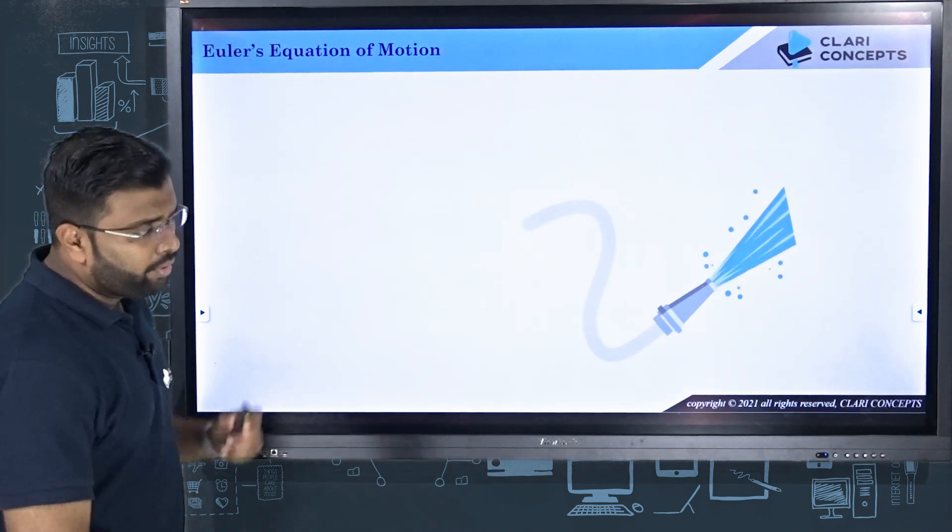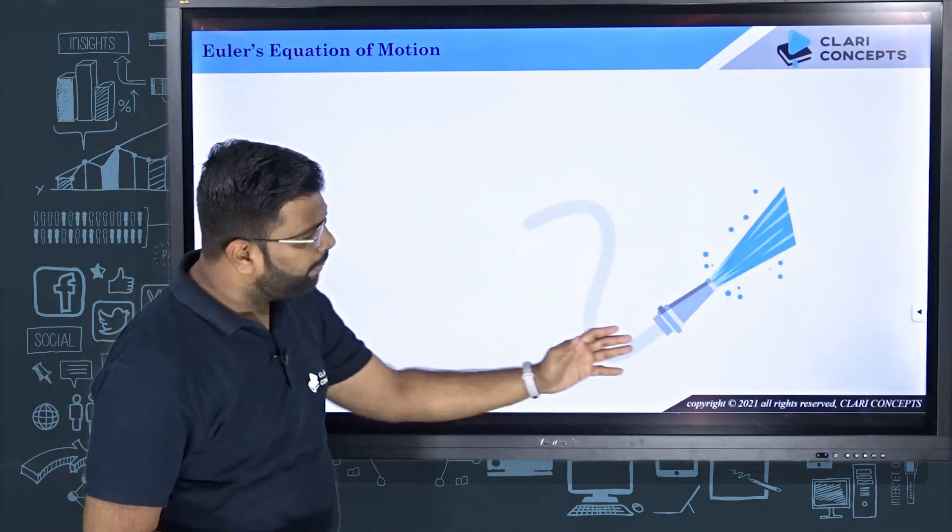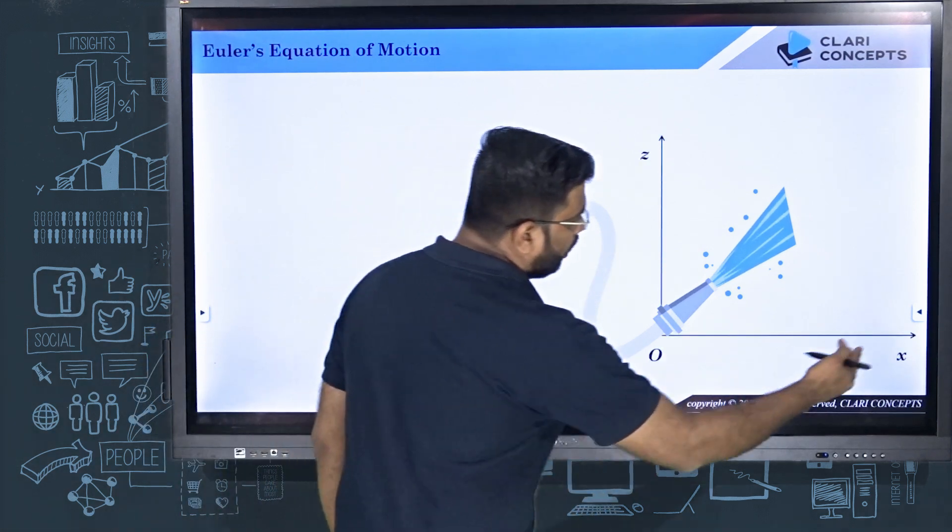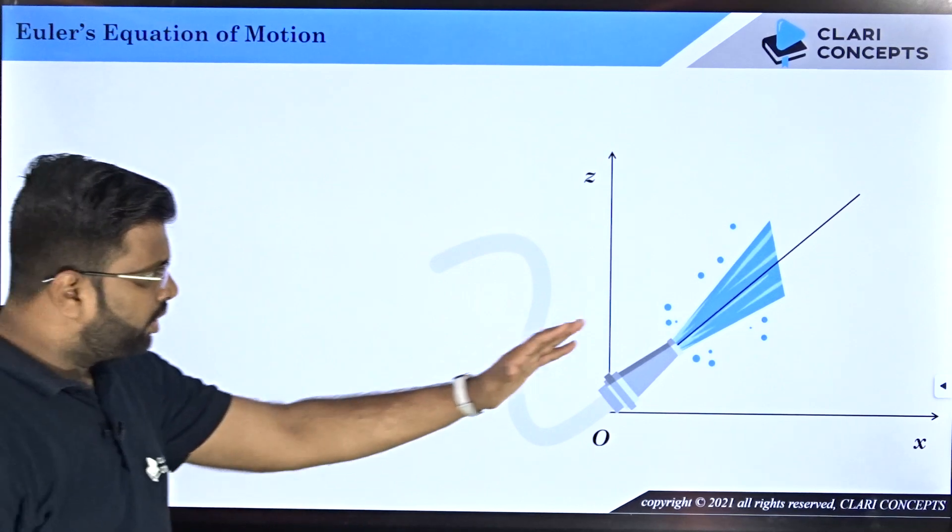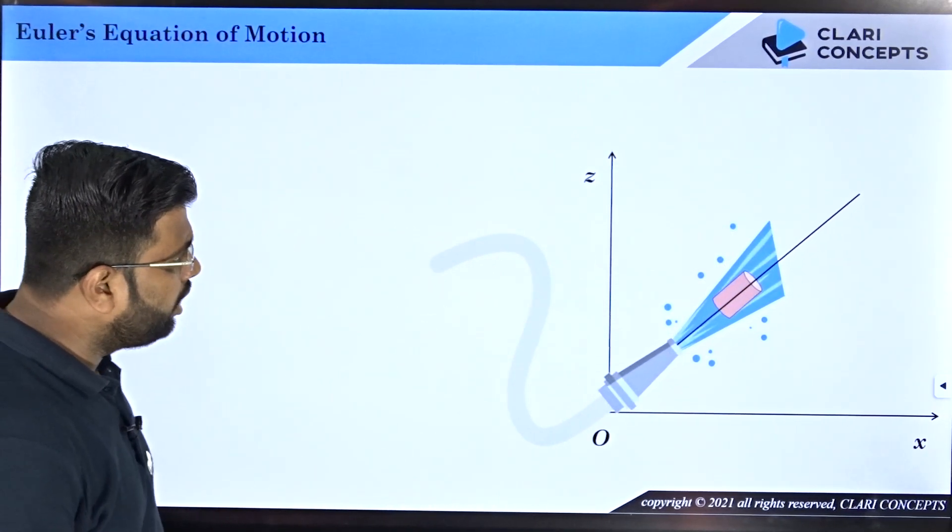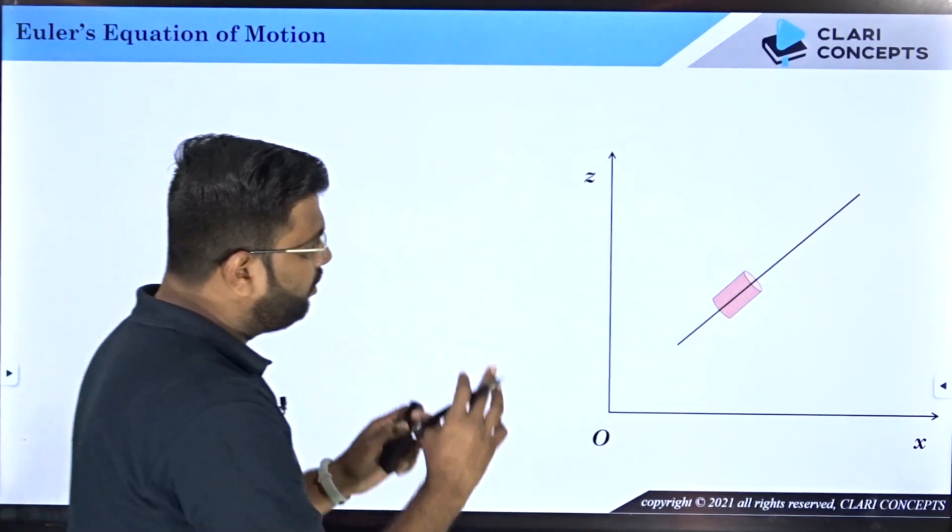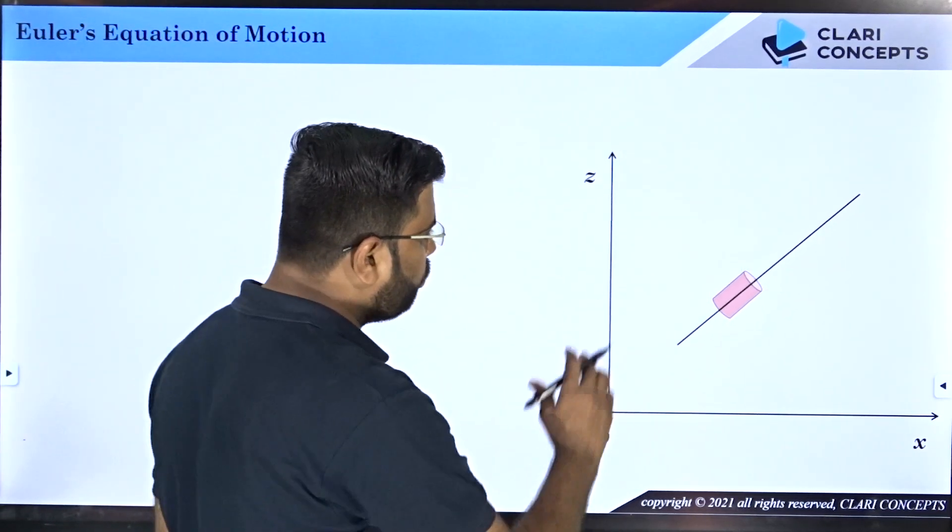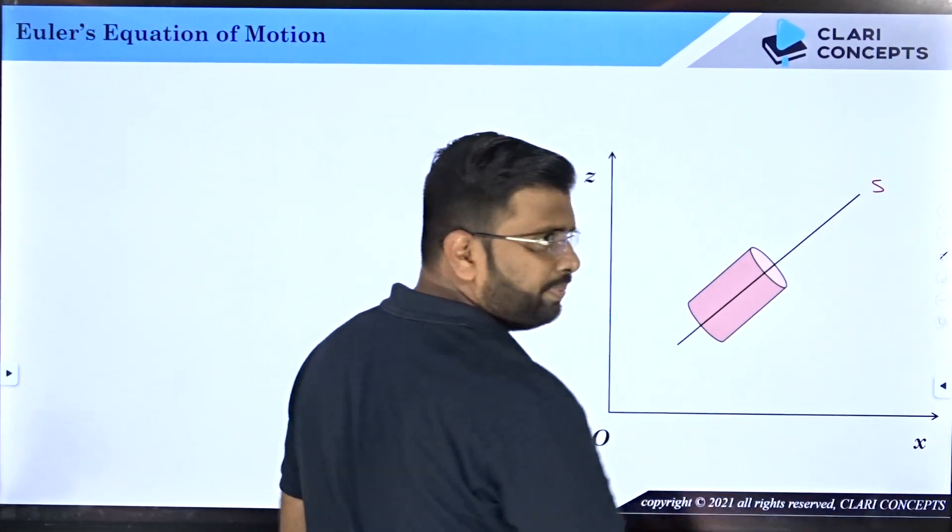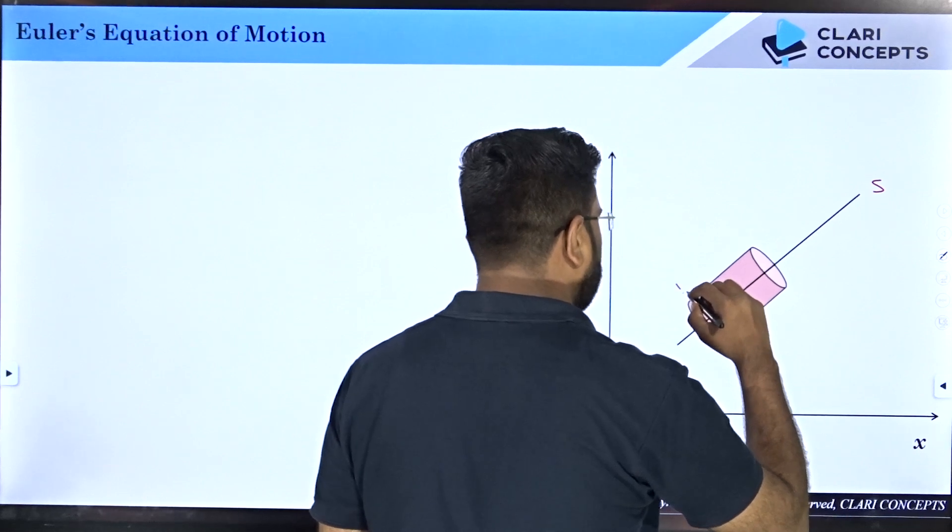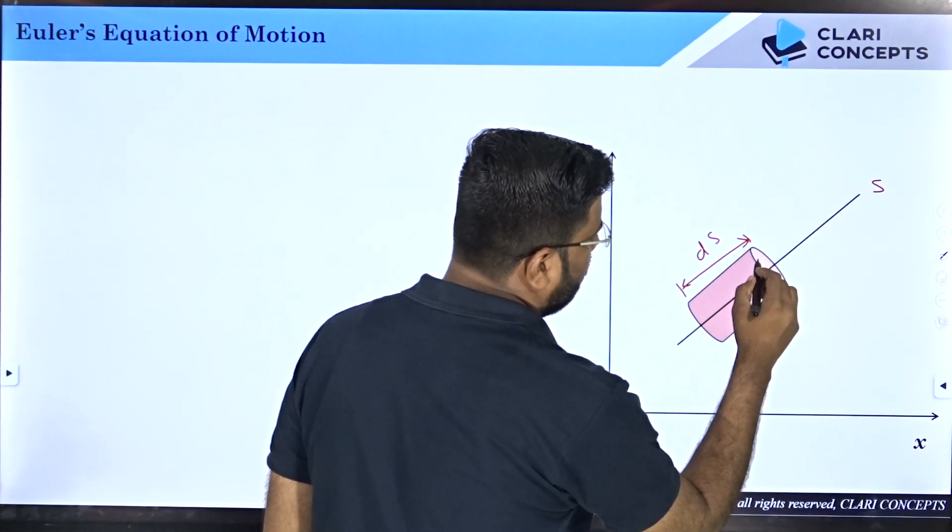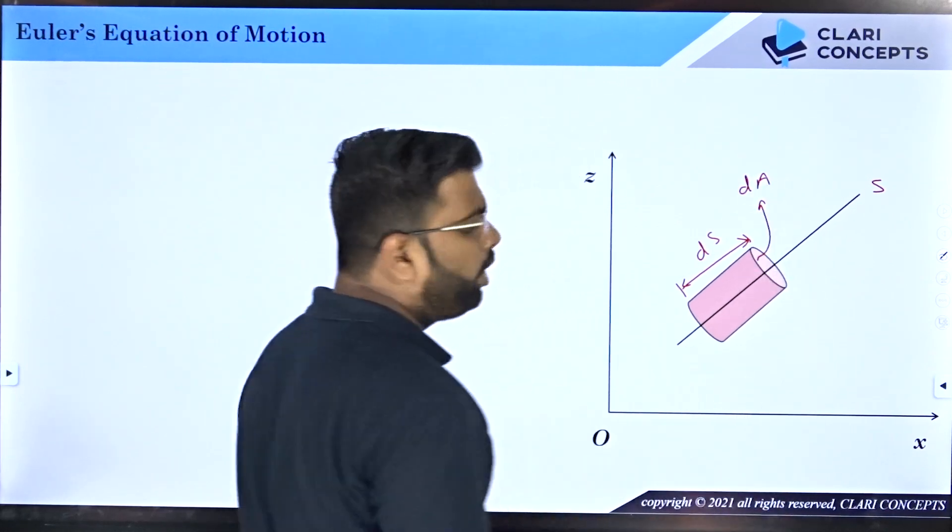So let us talk about the derivation of the equation. Let's say I have a pipe and the fluid is flowing in some direction. I'll mark the coordinates as X and Y, and the fluid direction is defined by this particular line. Now let's say I have this cylindrical fluid element. If I zoom into this element to give you more clarity, this fluid element is flowing in direction S. I would mention the length of the fluid element as dS and the cross-sectional area as dA.